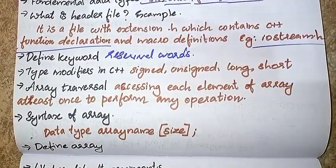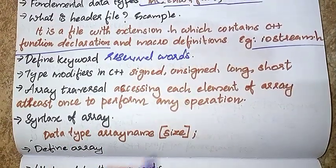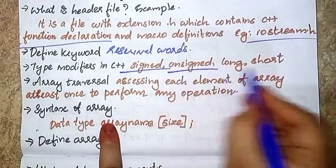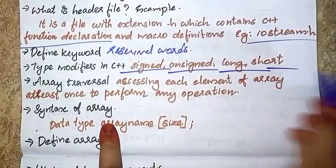Then type modifiers in C++: Signed, Unsigned, Long, Short.